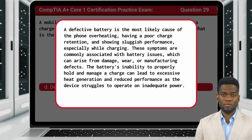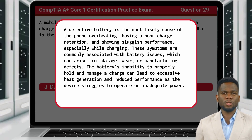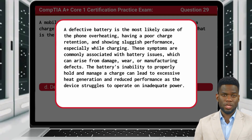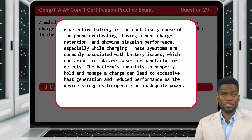A defective battery is the most likely cause of the phone overheating, having poor charge retention, and showing sluggish performance, especially while charging. These symptoms are commonly associated with battery issues, which can arise from damage, wear, or manufacturing defects. The battery's inability to properly hold and manage a charge can lead to excessive heat generation and reduced performance as the device struggles to operate on inadequate power.